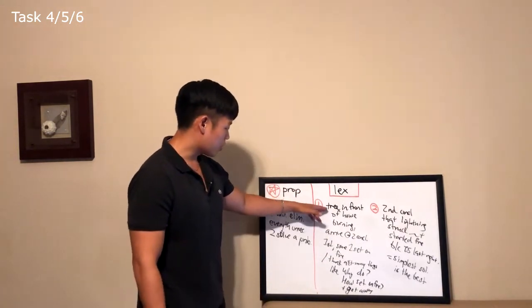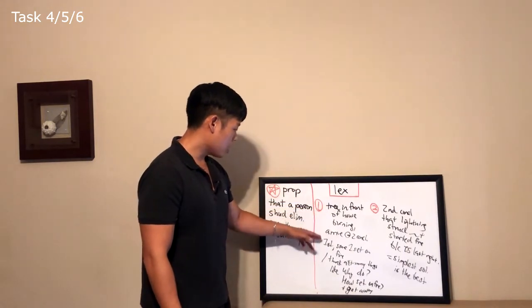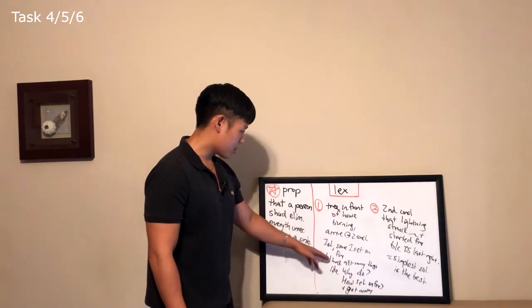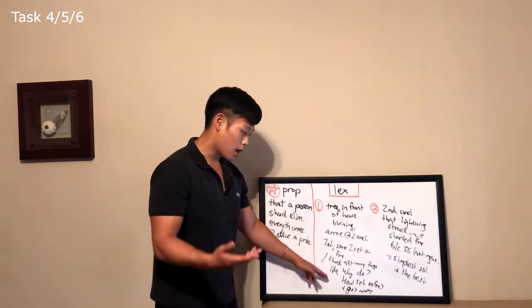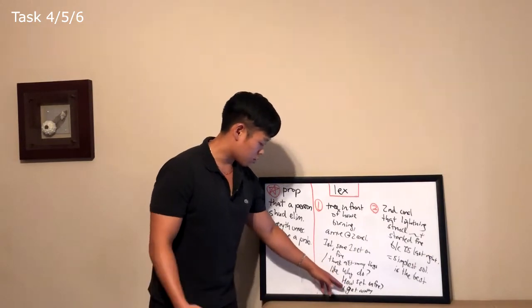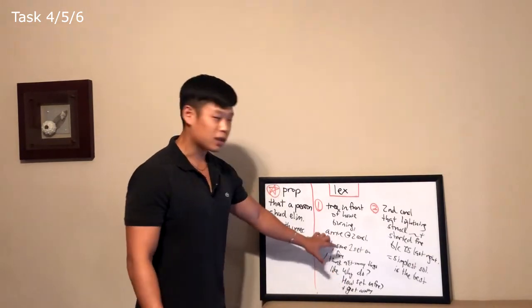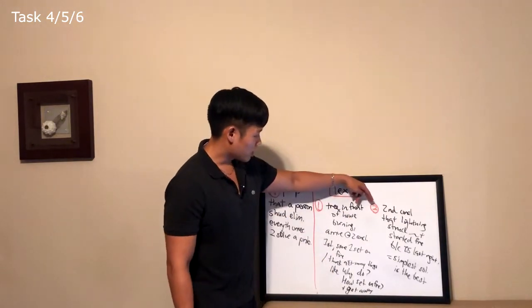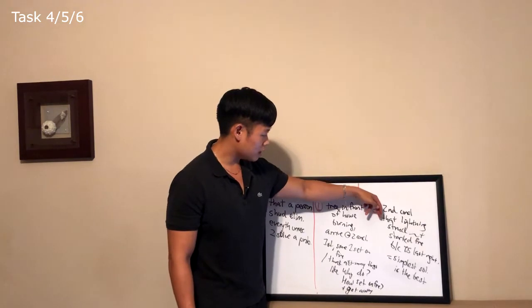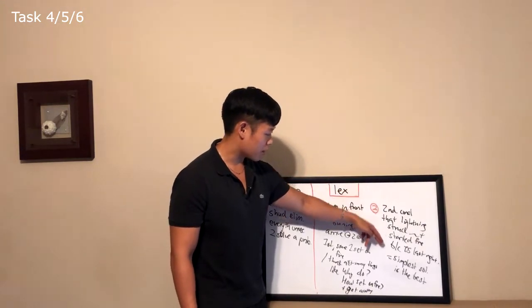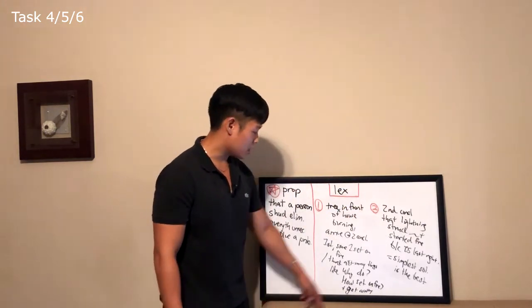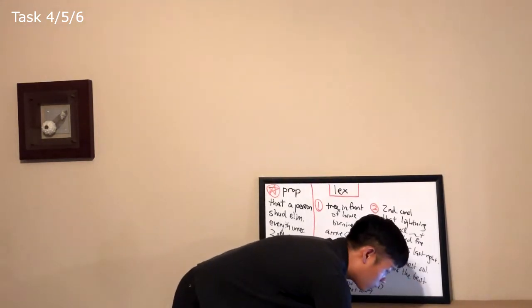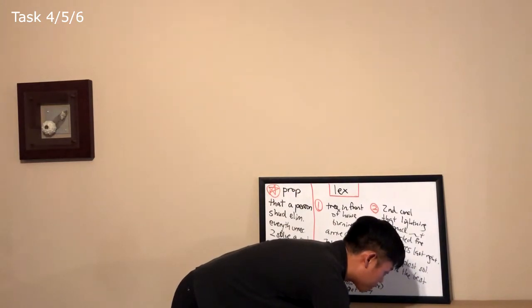For the first part, I wrote down: tree in front of house burning, arrive at two conclusions. First, someone set it on fire — but think about many things: why did he do it, how did he set the tree on fire, and how did he get away? So it's complicating because the person has to think of many different components. The second conclusion is that lightning must have struck the tree and started the fire because there was a thunderstorm last night — so the simplest solution is the best. Now that we know what I took notes on, let's listen to my sample response.